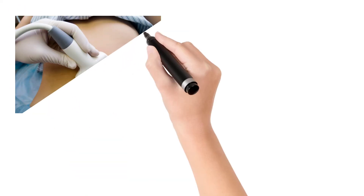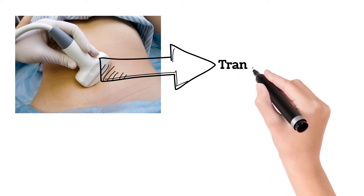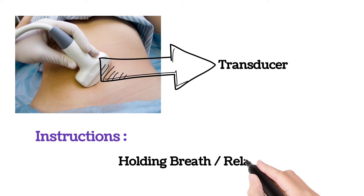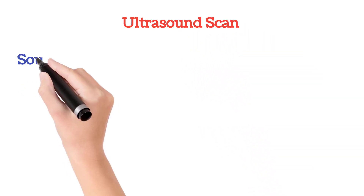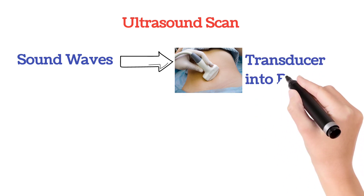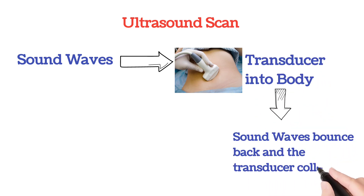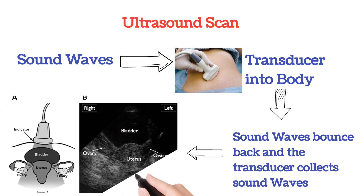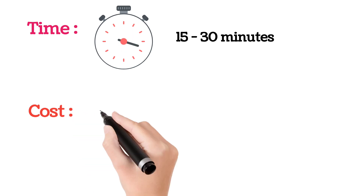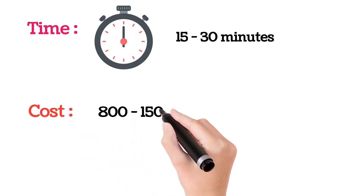After gel application, a transducer probe is passed or moved over the skin. During this procedure, the doctor will give instructions such as to hold your breath or to relax so that a clear image can be obtained. Ultra high frequency sound waves travel from the probe into the body, and the probe collects the sound waves that bounce back, which then enter the computer so that an image is produced. The time taken for an ultrasound scan is generally 15 to 30 minutes, and the cost varies with location — approximately 800 to 1500 depending upon the type of scan.